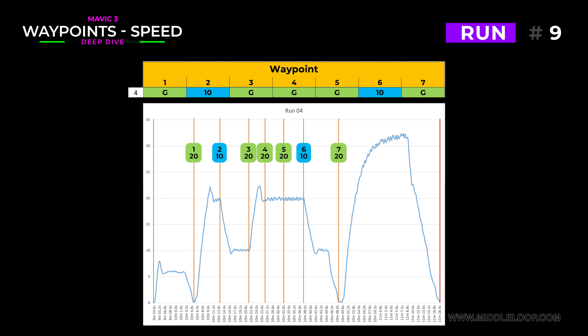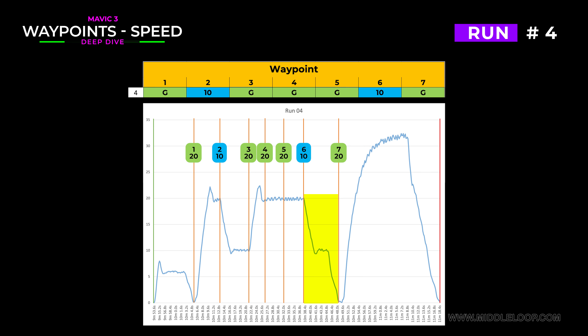Run number 4: here we have waypoints 2 and 6 set to 10 miles per hour. This is kind of interesting. Instead of continually decelerating like before, it was able to hit the 10-mile-per-hour goal and maintain it briefly before slowing again. I suspect that if we had more distance between the last two waypoints, most of the time would be spent at the goal speed and it would only start to decelerate as it approaches the last waypoint.